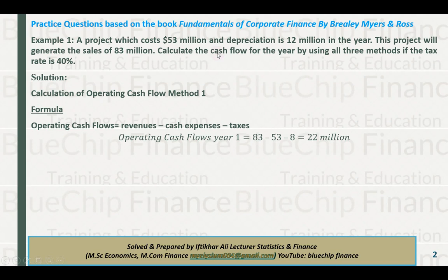These questions are related to the book 'Corporate Finance: Fundamentals of Corporate Finance' by Brealey, Myers, and Ross. In the first question, a project costs 53 million and depreciation is 12 million per year. This project will generate sales of 83 million. Calculate the cash flow for the year using all three methods, given a tax rate of 40%.